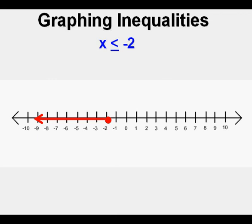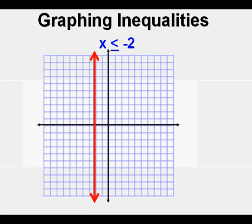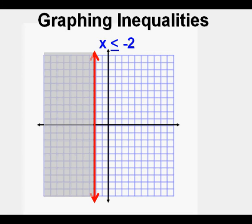To graph it on a coordinate plane, we draw a vertical line at x equals negative 2. It's a solid line since it includes equal to, and since it's less than with the symbol pointing to the left, we shade to the left of the boundary line. This is what it looks like.